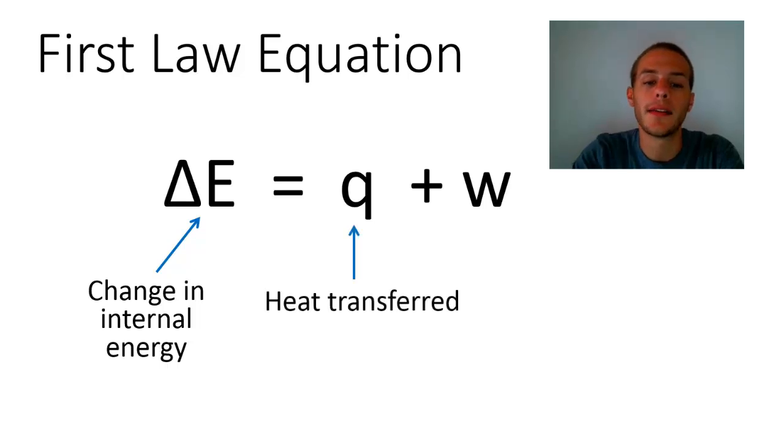Q, that is actually a symbol for heat. It's the heat that is transferred between a system and its surroundings. And then w, that is the work that is done. And the work can either be done on the system or it can be done on the surroundings by the system. So let's go ahead and define all three of these terms, just so we know a little bit more about this equation.